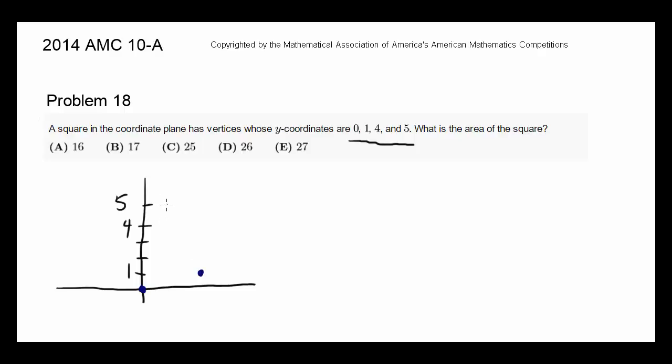another vertex lying when y is 5, another vertex lying when y is 4. This looks like a square. So let's connect the dots. This is supposed to be a square.